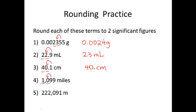First two places, that nine would round the zero up to a one. So it would be 1100 miles. And here are the first two places. That two would not round its preceding digit up. It would just stay at two. So it would be 2200 meters.